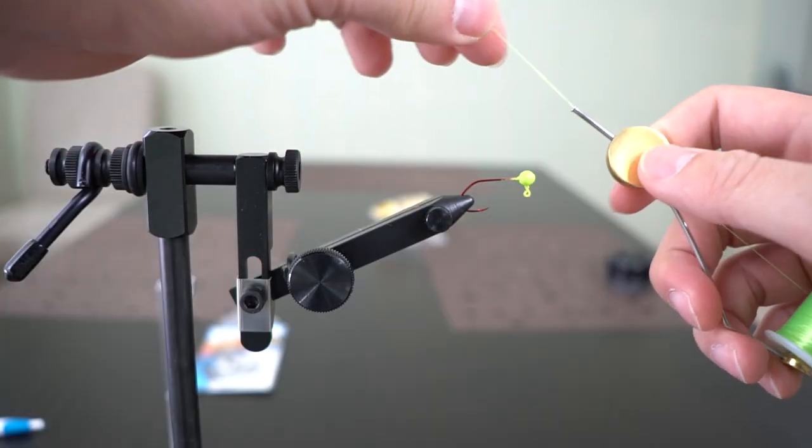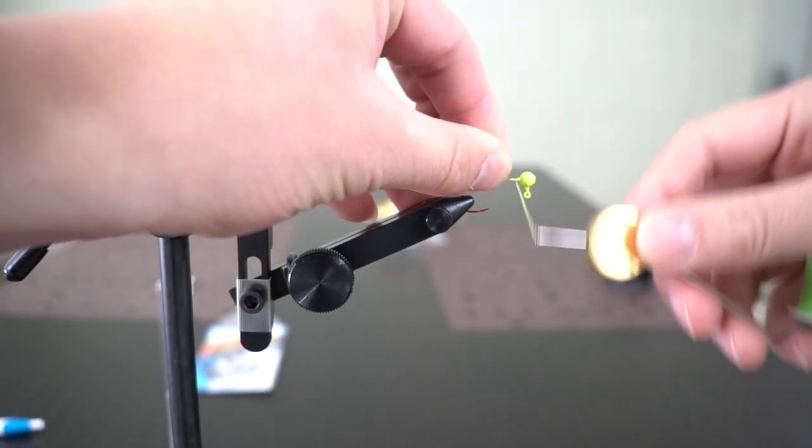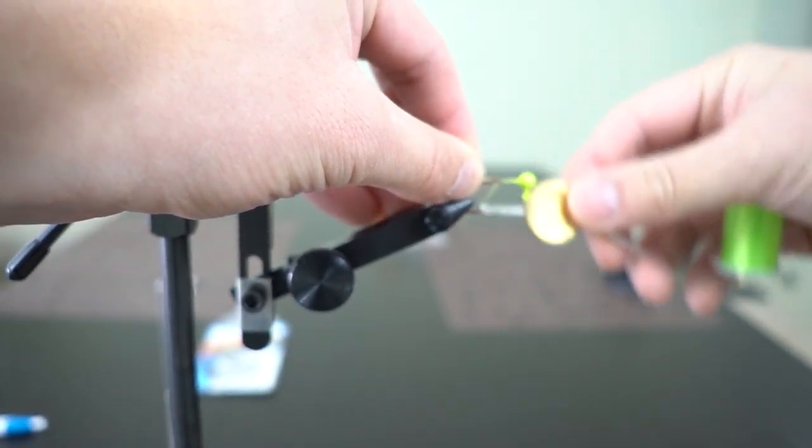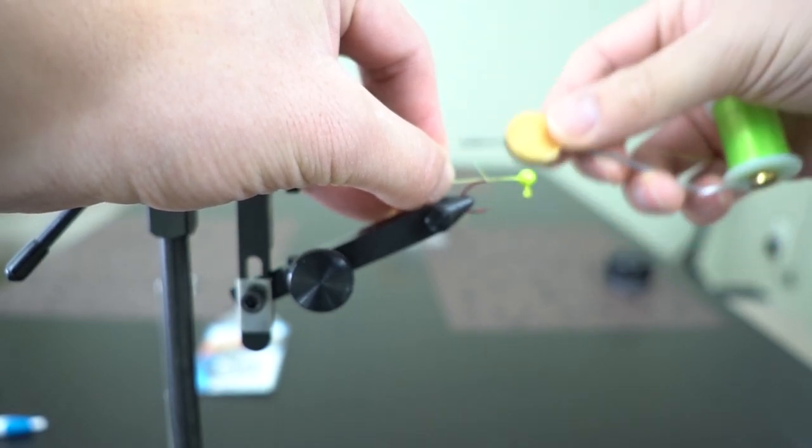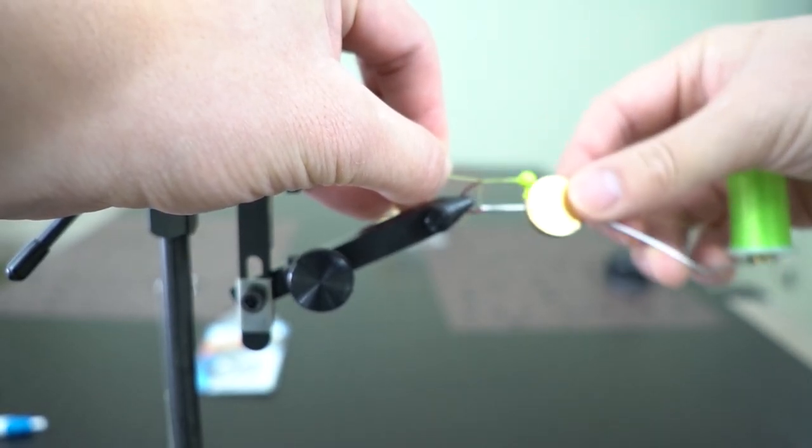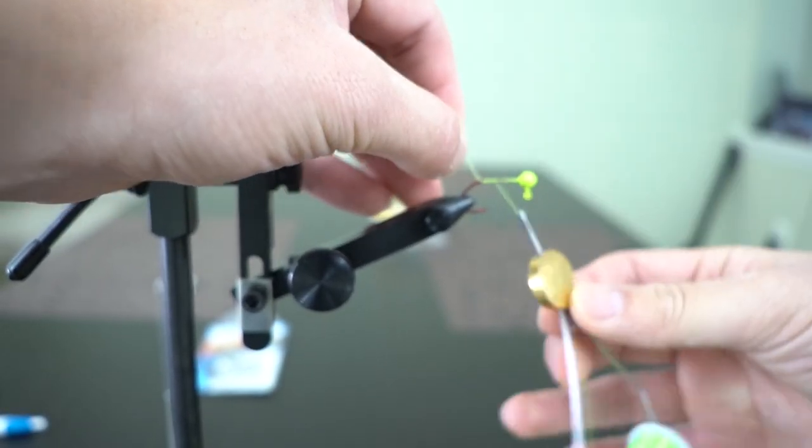First thing you want to do is build the line onto the shank of your hook, get it all the way past the barb right to where the hook starts to bend. And then trim off the waste.